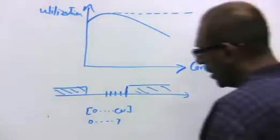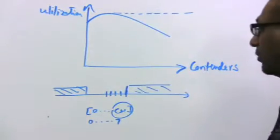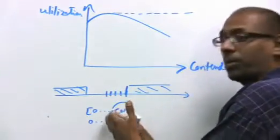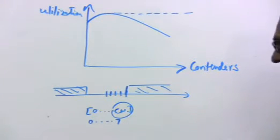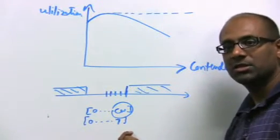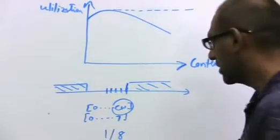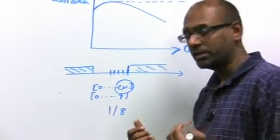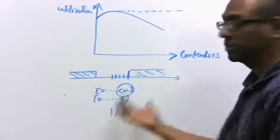The point is the following. Notice that this contention window number is highly a function of the number of contenders. If you have only one contender, you don't need to back off. You can basically pick 0. If you have, correspondingly at the other extreme, an infinite number of contenders, this value should be infinity. As a specific example, if you have two contenders and they pick values between 0 and 7, each of them has up to 8 choices. There is a one-eighth probability of collision, because each device can choose up to 8 values, 0 through 7, which means there's a total of 64 combinations, any 8 of which will cause collision, because if they happen to pick the same value, there's a collision. So the probability of collision in this case is one-eighth.